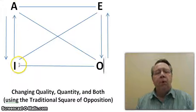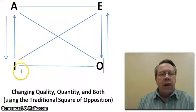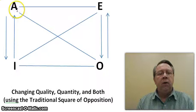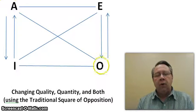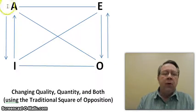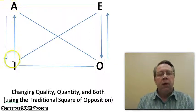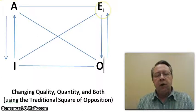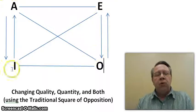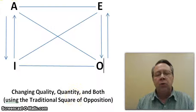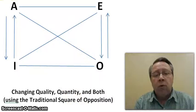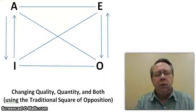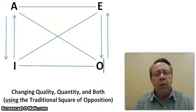If we change both the quantity and the quality, we're going to go to the diagonal. So an O statement, when we change both, becomes an A statement, and vice versa. An E statement becomes an I, and vice versa. We'll use the traditional square of opposition — we'll see what that's all about in section 4.5. We have a brief introduction to the modern square of opposition in 4.3.